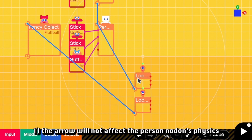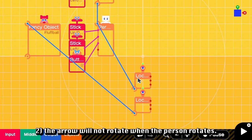First, the arrow will not affect the person Nodon's physics. Second, the arrow will not rotate when the person rotates.